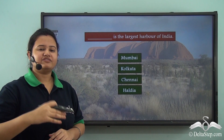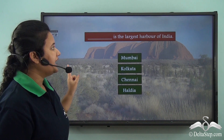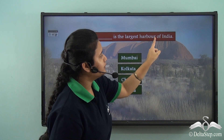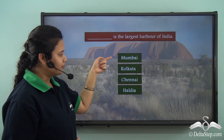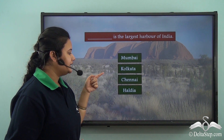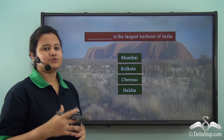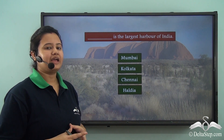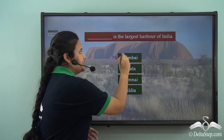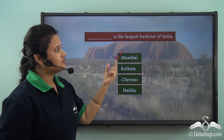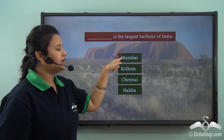Let us try to answer this objective: Dash is the largest harbour of India. The options given are Mumbai, Kolkata, Chennai, and Haldia. We just read that Mumbai is the largest harbour of India, so the correct option will be Mumbai.